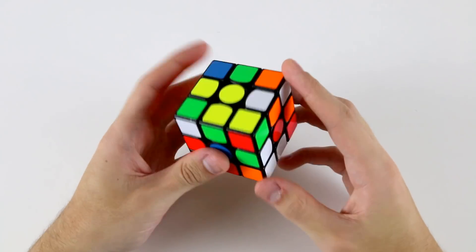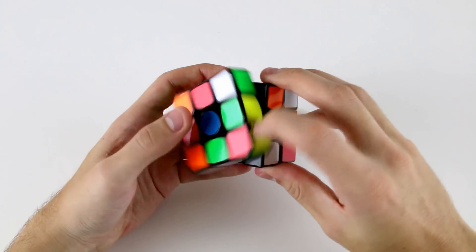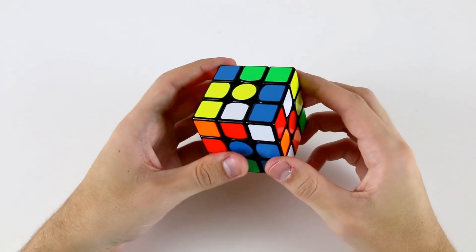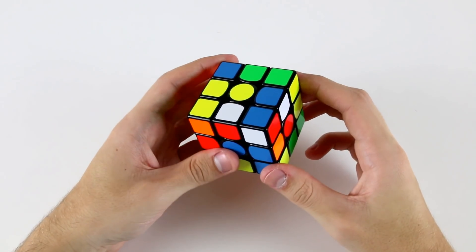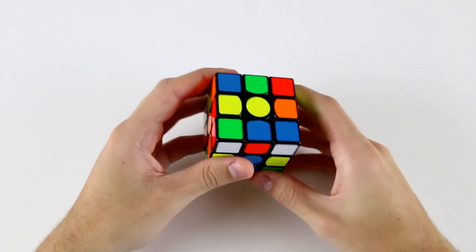I'm going to do the white cross as follows. I'm going to insert these two first by doing f r2 and then do something like d2 u' r' u r' f like that.